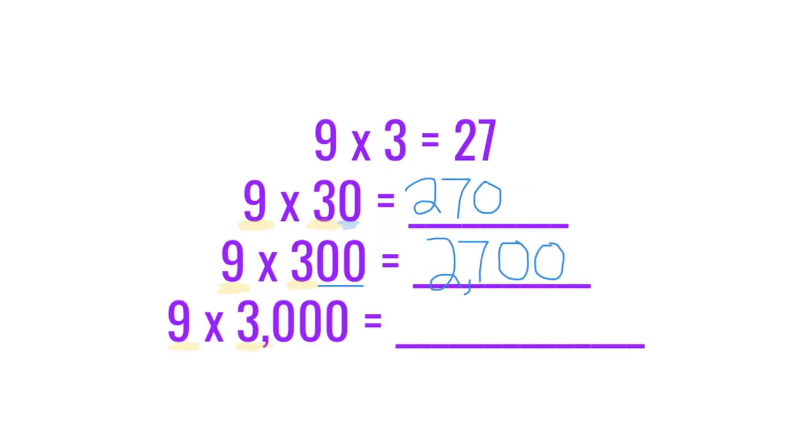The basic fact for 9 times 3,000 is 9 times 3 equals 27. And now we have three zeros: 1, 2, 3. So 9 times 3,000 equals 27,000.